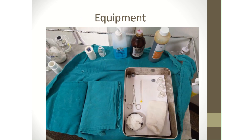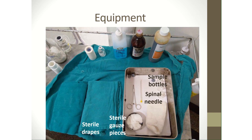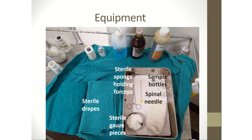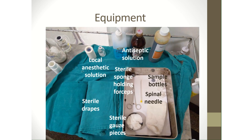The equipment that has to be assembled before performing the procedure includes the spinal needle, sterile sample bottles, sterile gauze piece, sterile drapes, sterile sponge holding forceps, local anesthetic solution, and the antiseptic solution.